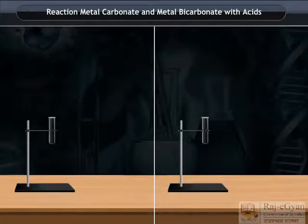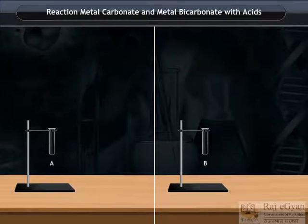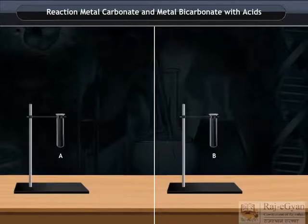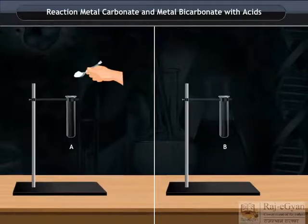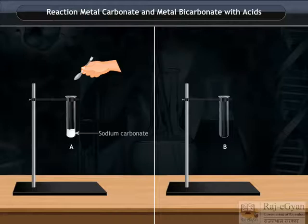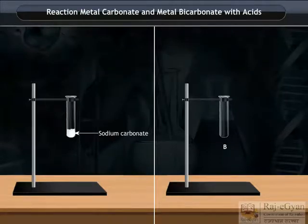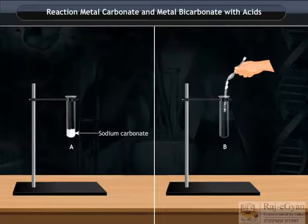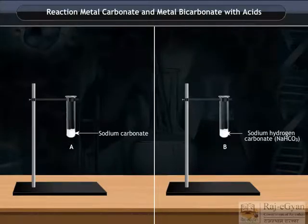Take two test tubes, label them as A and B. Take about 0.5 gram of sodium carbonate, Na₂CO₃, in test tube A and about 0.5 gram of sodium hydrogen carbonate, NaHCO₃, in test tube B.